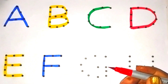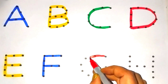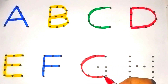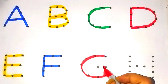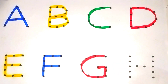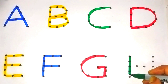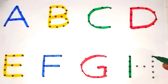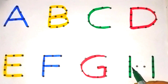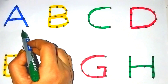Red color. G. G for Grapes. Green color. H. H for Horse.